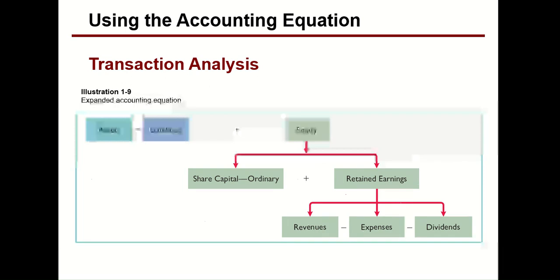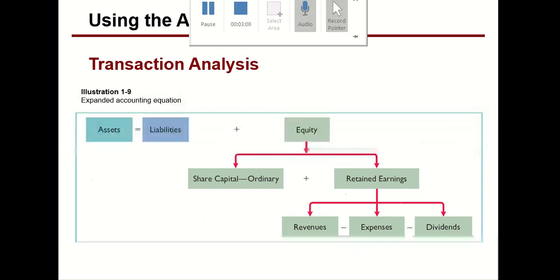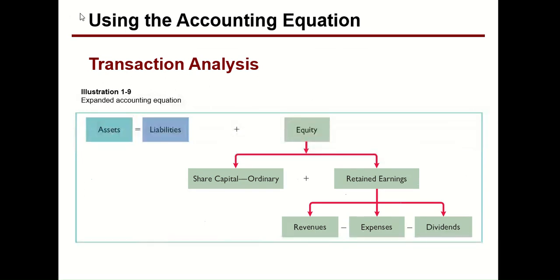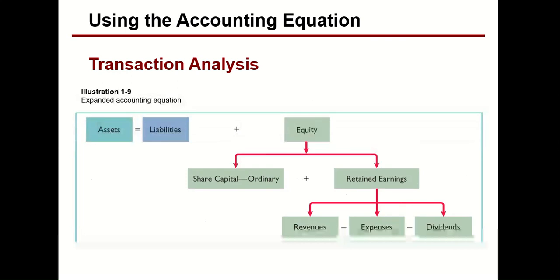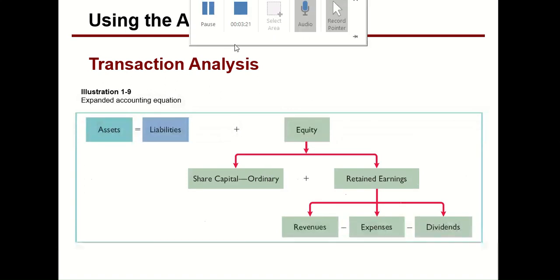Retained earnings means the amount which an organization retains. It is calculated as: Revenue minus Expenses minus Dividends. We have already defined assets, liabilities, and equity in the accounting equation, but there are some terms — revenue and expenses — that we still need to define.